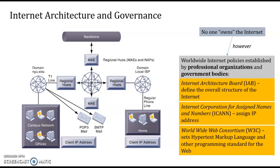Because of ICANN, you cannot just randomly assign numbers — you cannot just say 'I love the number 8, so I want my address to start with 8.' You have to follow the rules and procedures. Then we have the W3C — the World Wide Web Consortium — which sets the HTML and other programming standards for the web.